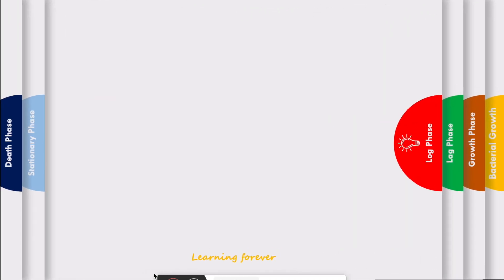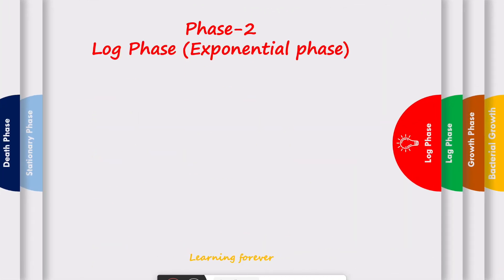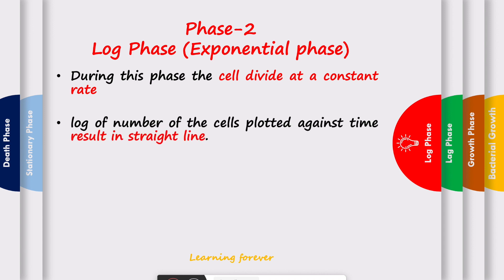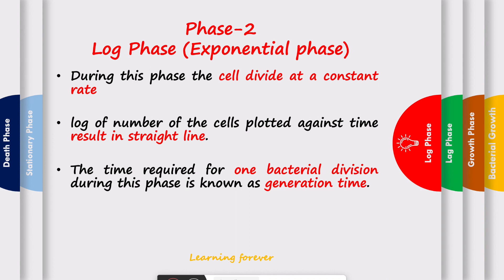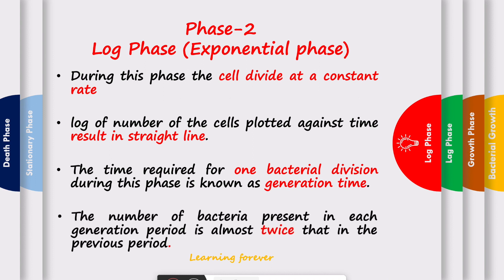Let's see phase two. Phase two is the log phase, also called the exponential phase. During this phase, the cells divide at a constant rate. Log of number of cells plotted against time results in a straight line. The time required for one bacterial division during this phase is known as generation time. The number of bacteria present in each generation period is almost twice that in the previous period.